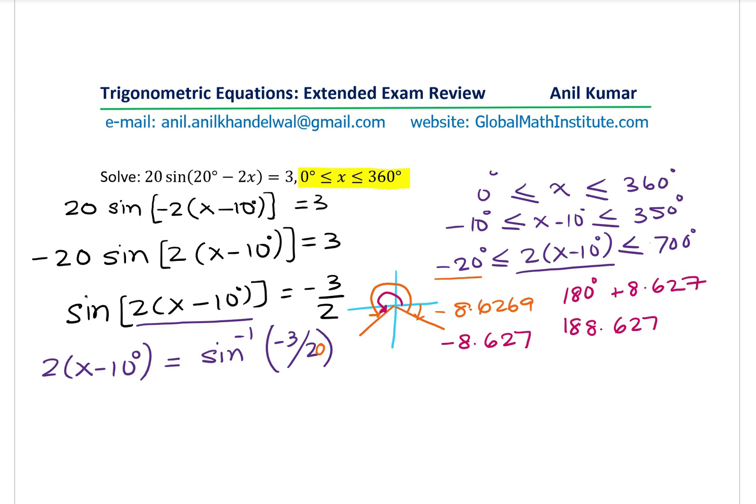So when I add 360 to each, what do we get? 360 minus 8.627 gives us 351.373. If I add 360 to 188.627, I get 548.627. Now we can go up to 700. So let me add 360 again. Clearly, if I add 360, it will go above. So we get only these four valid solutions.